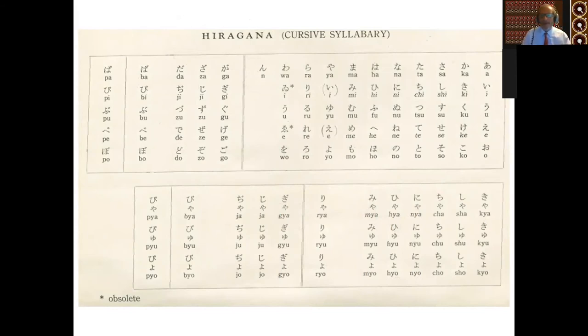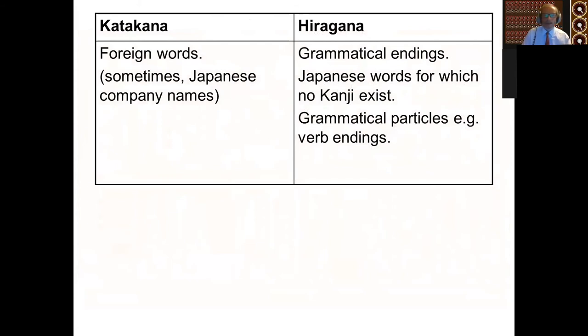Now there's a second syllabary called hiragana, which is effectively matches katakana on a one-to-one basis. Katakana is used in foreign words and sometimes Japanese company names. Hiragana is used for grammatical endings, Japanese words for which no Chinese characters or kanji exist, and grammatical particles such as verb endings and plurals and so on. It's a feature of Japanese that it uses a fraction of the Chinese character set. And the Chinese character set is lacking grammatical particles. So they had to create their own so that they could then use Chinese characters for the main sense of a word. And then they can then put tenses onto verbs and negate verbs and so on by using verb endings.